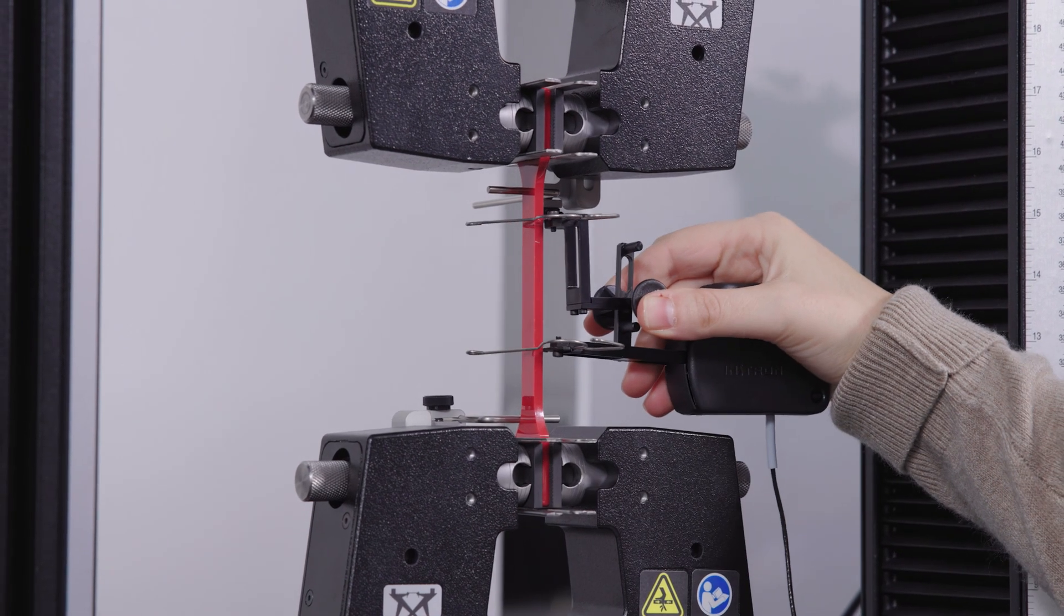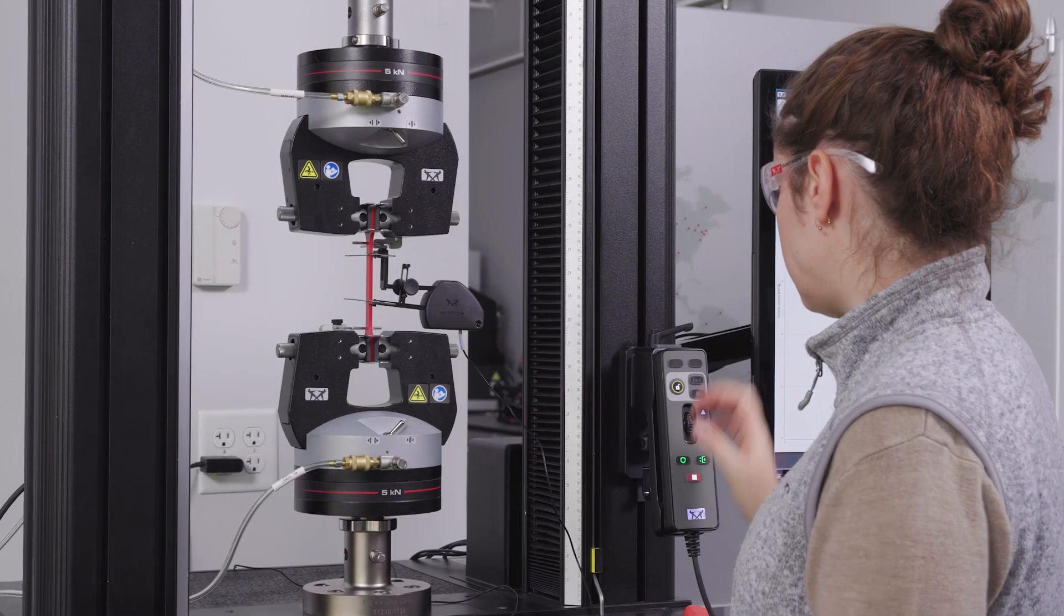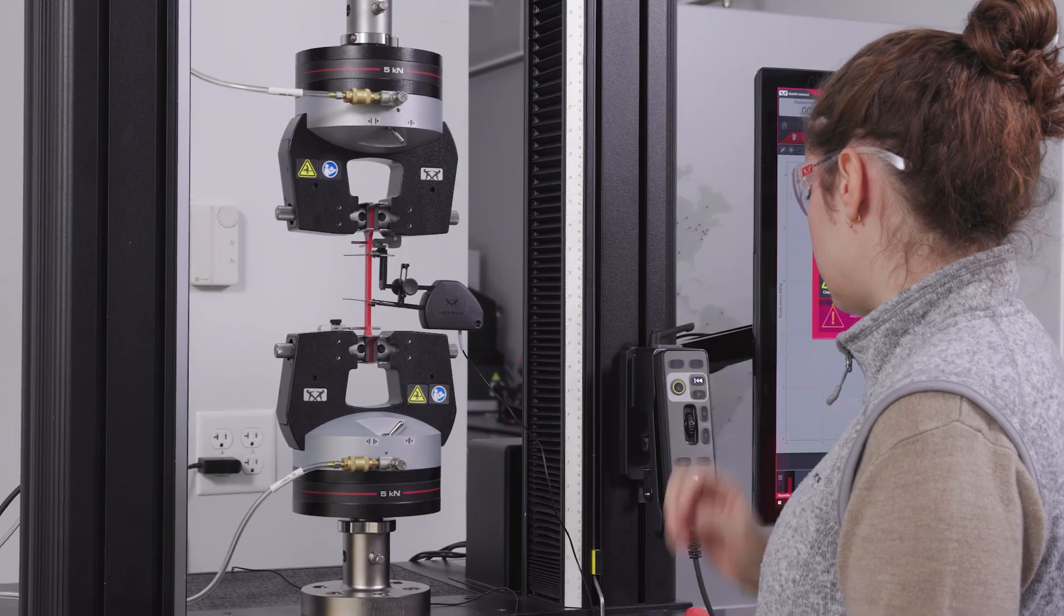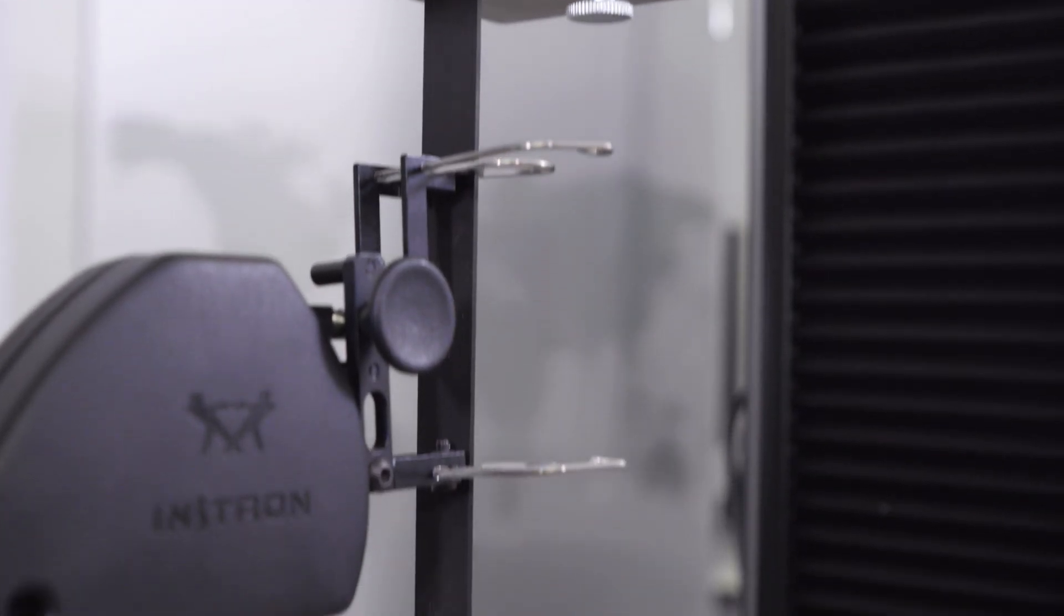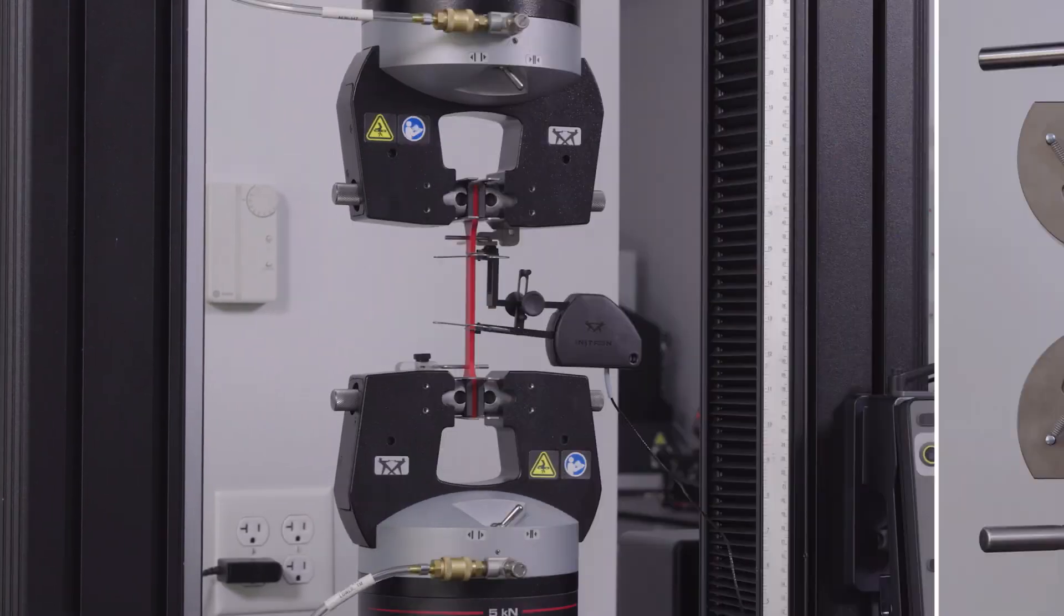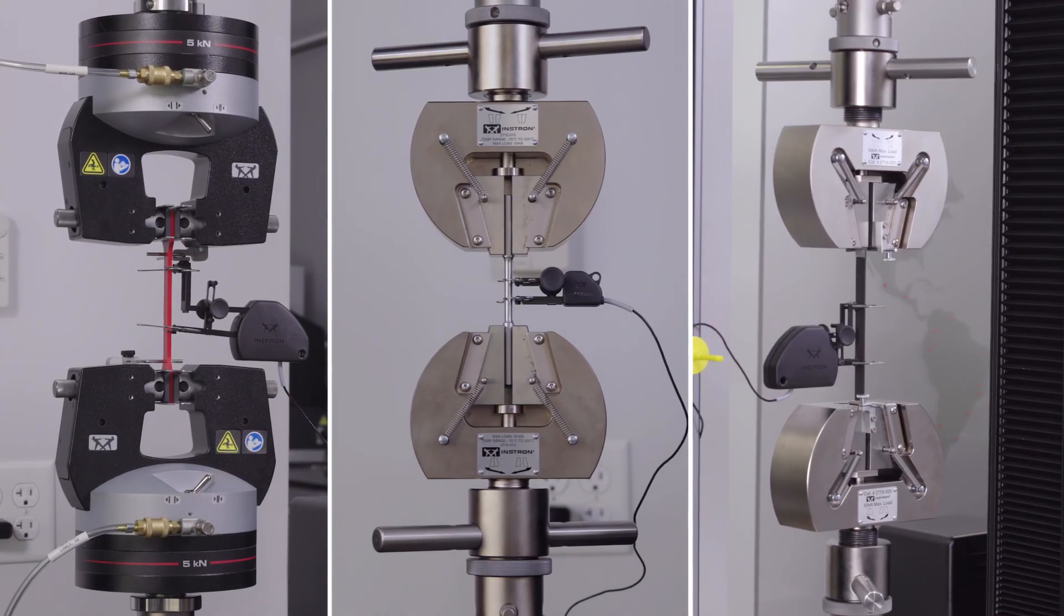Instron's Clip-on Axial Strain Gauge Extensometer is a quick and easy solution for measuring strain during tensile, compression, and flexural testing on a wide range of materials, including plastics, metals, composites, and more.